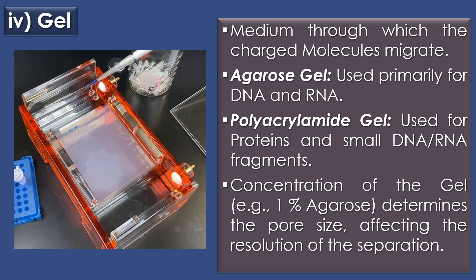The fourth component is gel. Gel is the medium through which the charged molecules migrate. There are two types of gel: the first is agarose gel and the second is polyacrylamide gel. Agarose gel is used primarily for DNA and RNA, and polyacrylamide gel is used for proteins and small DNA or RNA fragments. The concentration of the gel determines the pore size, affecting the resolution of the separation.